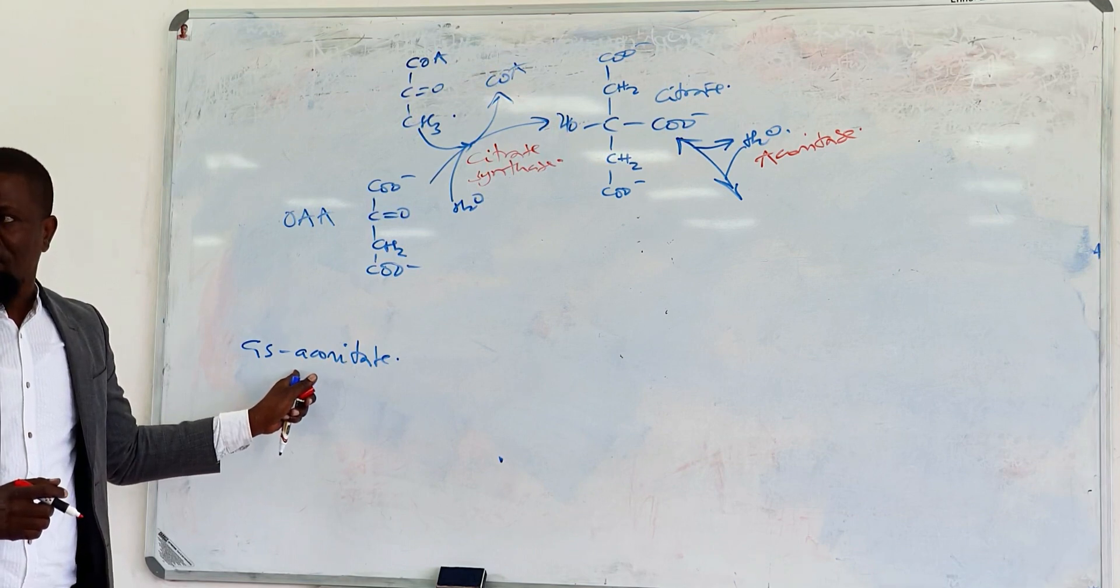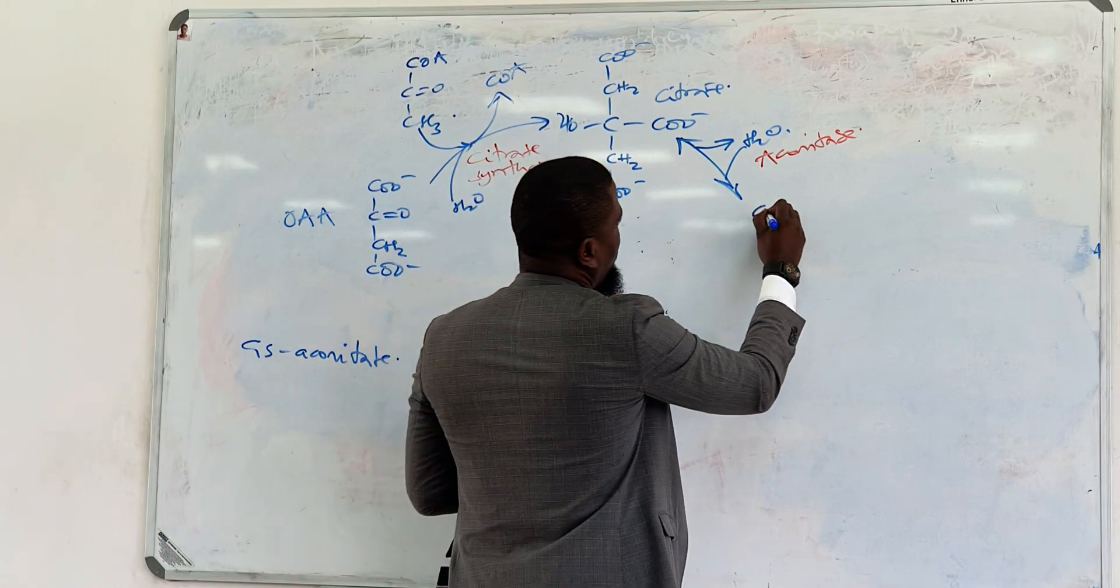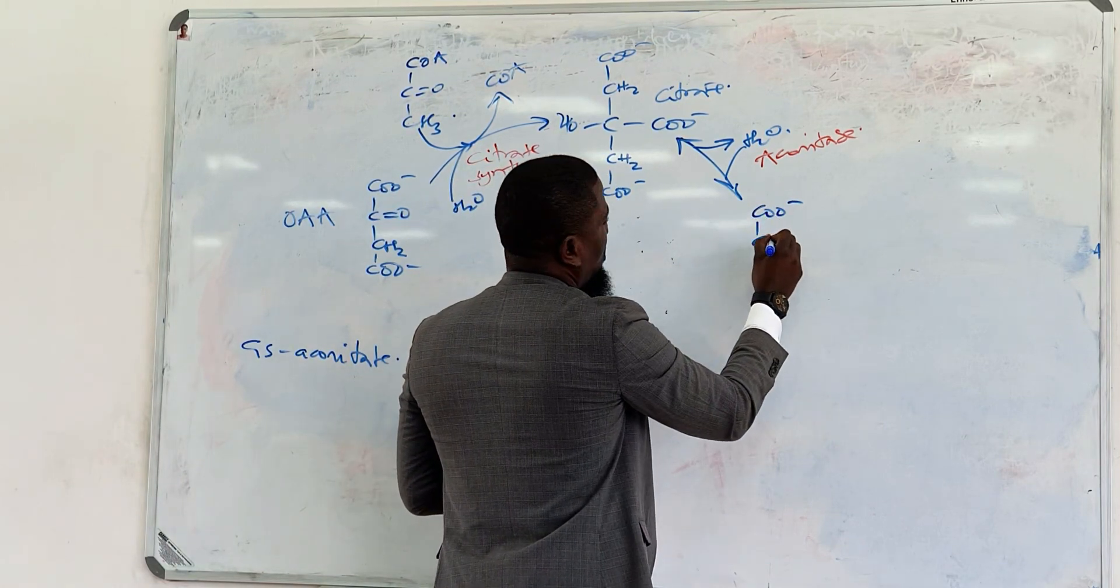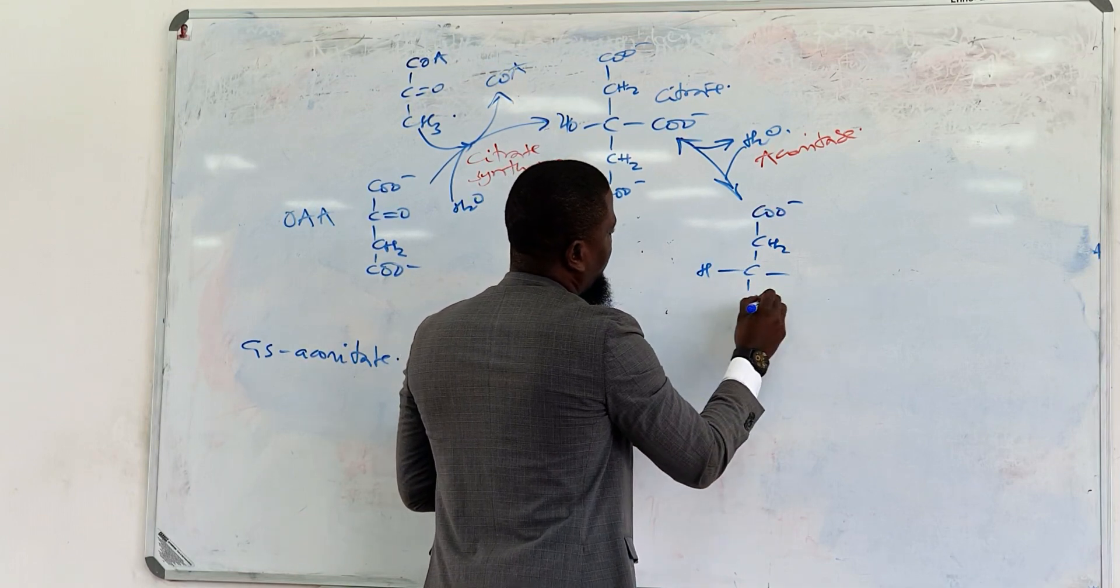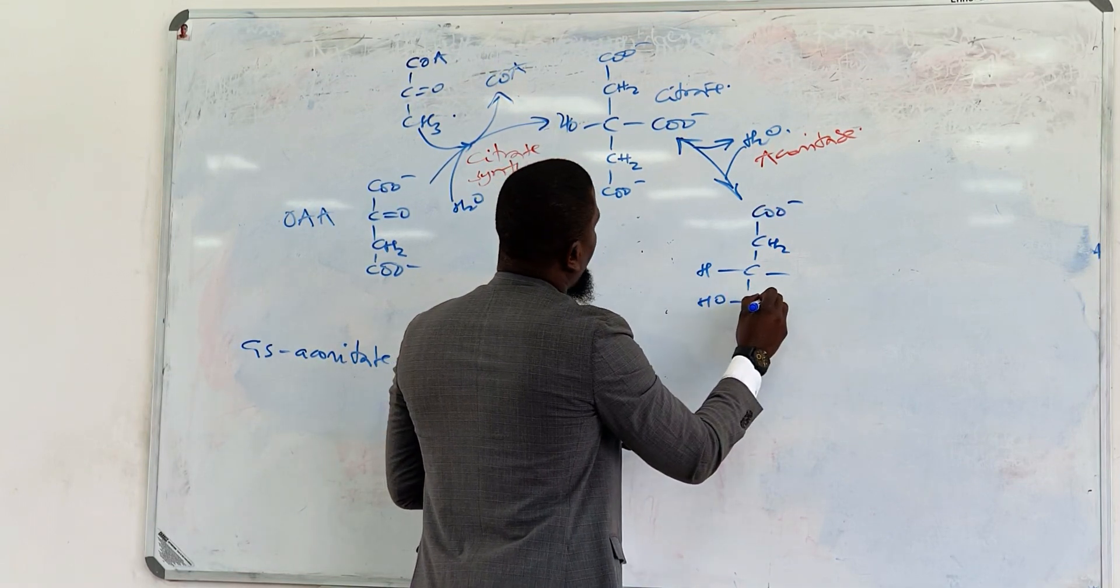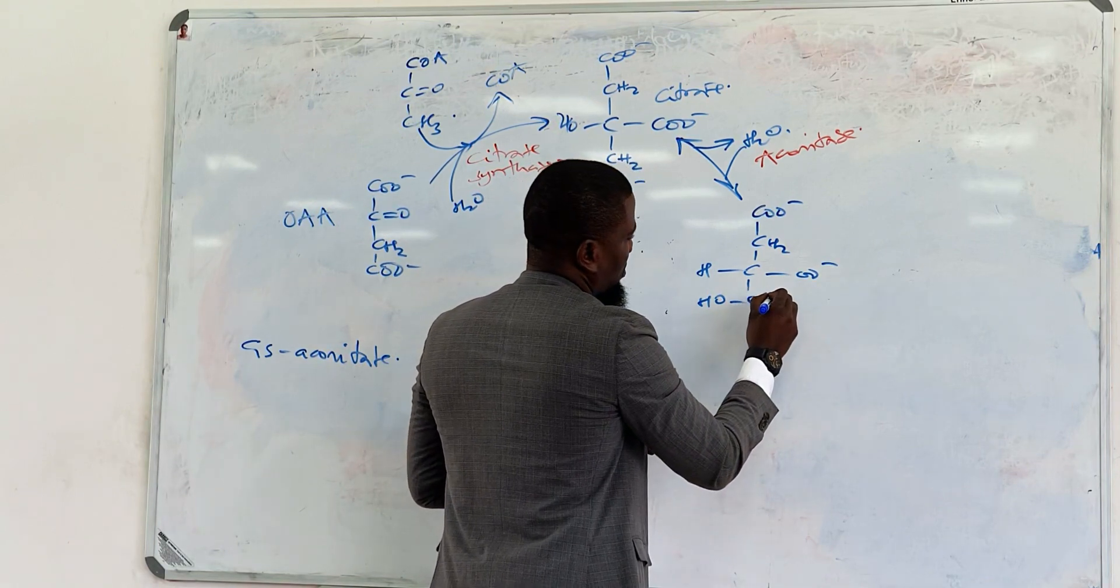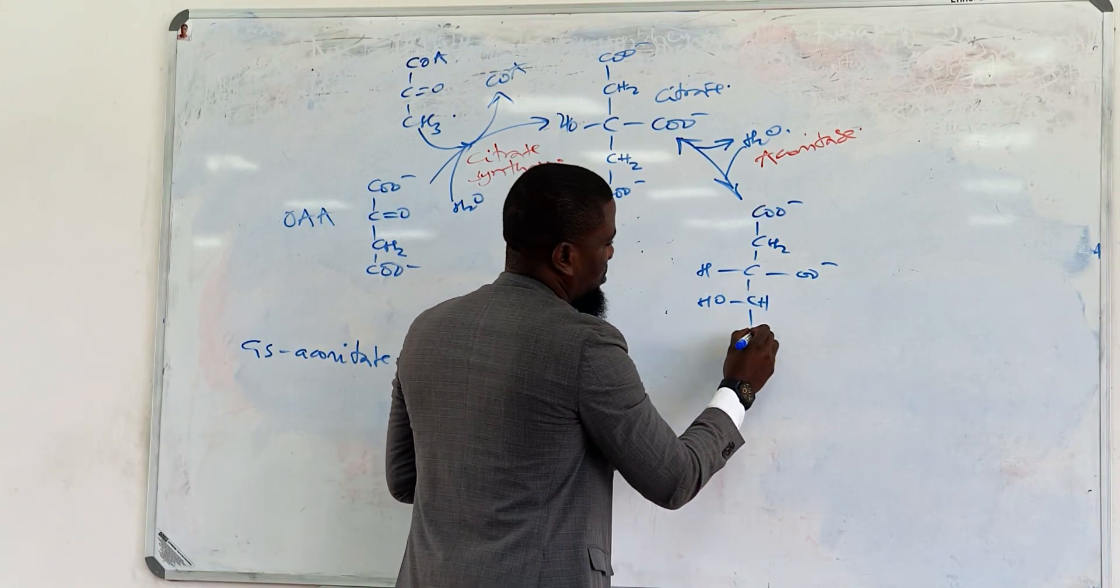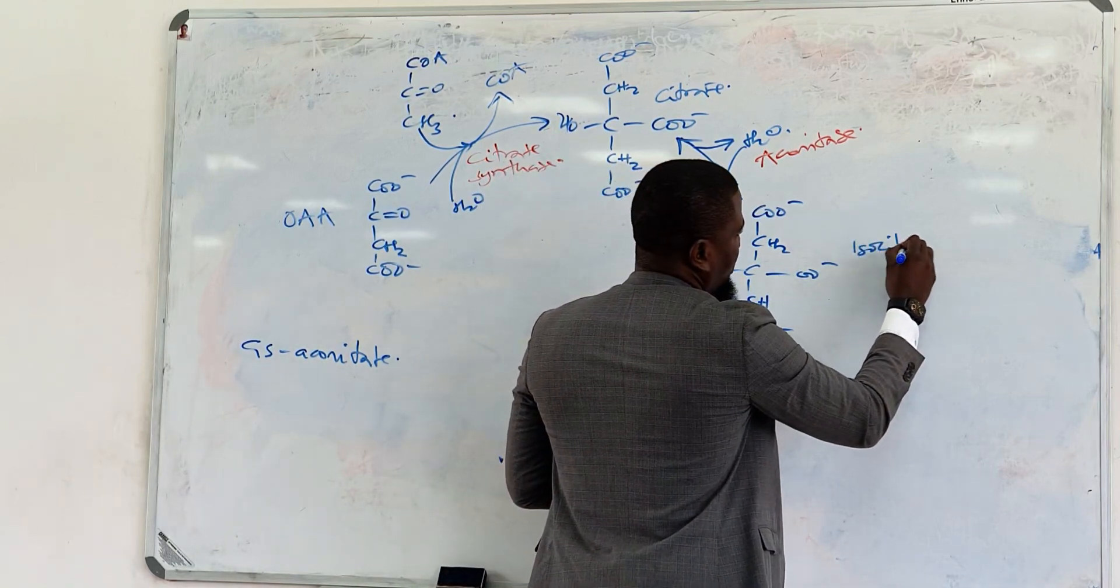And the reason is simply because of the intermediate that is actually produced. So the end product is isocitrate, which is basically an isomer of citrate.